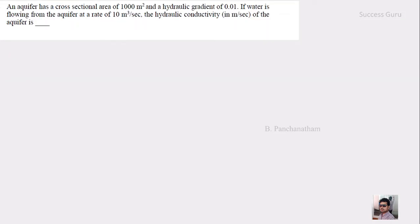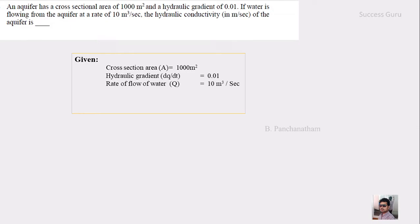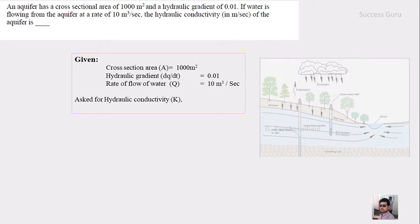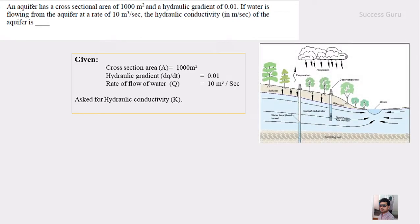The next question is that they had given few of the aquifer parameters and they had asked for the hydraulic conductivity. What they had given is the cross section area that is A is equal to 1000 meter square. And the hydraulic gradient that is dq by dt which doesn't have any unit, that is 0.01. And the rate of flow of water that is 10 meter cube per second. And they asked for the hydraulic conductivity. There is a rule, a law which connects all these four and that we call it as Darcy's law.